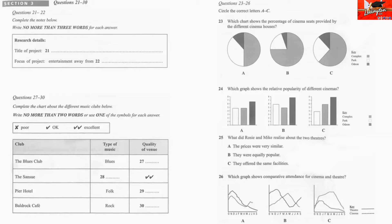In the second part of the discussion, Rosie and Mike talk about different music clubs. Look at questions 27 to 30 first. As you listen to the discussion, complete the chart about the different music clubs. Some answers have been done for you. Listen carefully and answer questions 27 to 30.